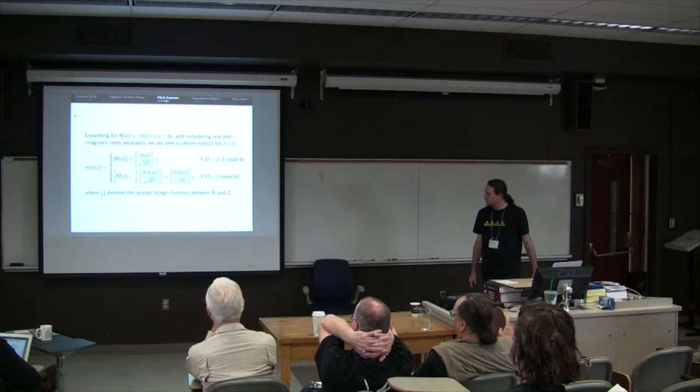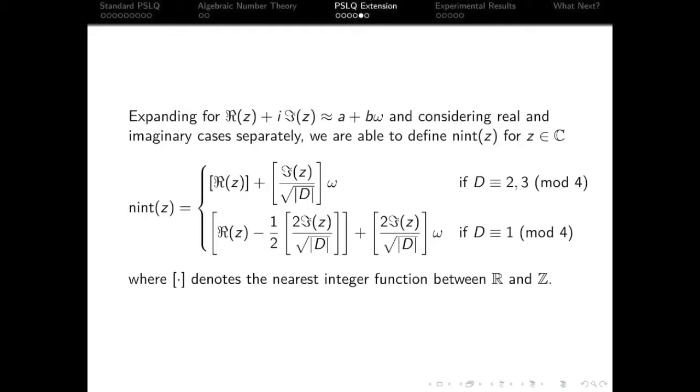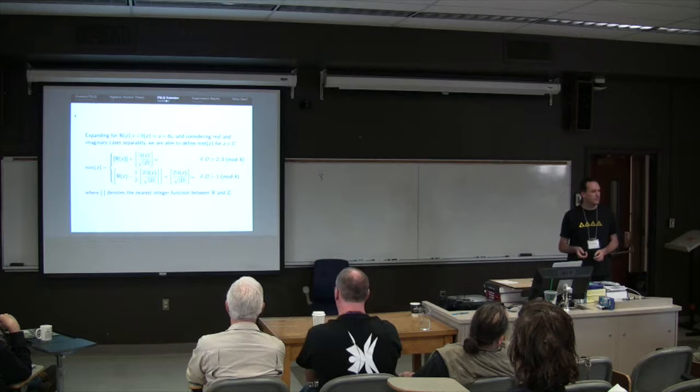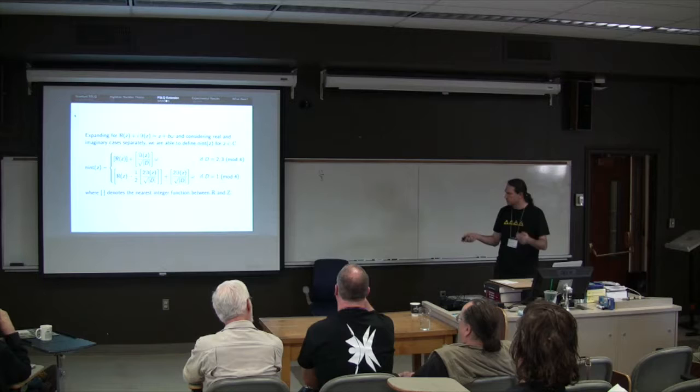Okay, so if I think about my element Z as being a real plus an imaginary part, and I want it to be approximately equal to a plus b omega, so I'm back to the omega notation now, just consider the real and imaginary cases separately. You get a set of simultaneous equations, and solving them gets us this mess for our nearest integer function. It's pretty straightforward for the mod 2 and 3 case, for the 2 or 3 mod 4 case, but this one's a mess here.